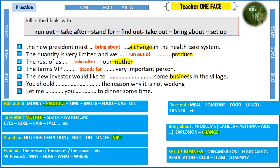Number five: 'The new investor would like to set up a business.' The keyword is 'business,' which goes with set up. Number six has the keywords 'reason' and 'why,' which signal find out — reason and why go hand in hand with find out. Number seven: 'Let me take you out to dinner.' The keyword 'dinner' tells us to choose take out.